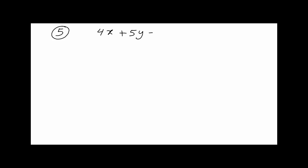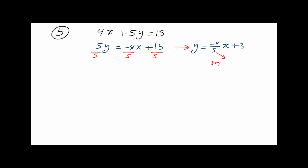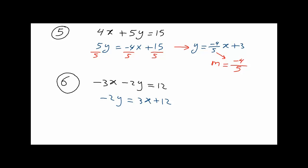Example 5: 4x plus 5y equals 15. Solving for y and dividing by 5 gives y equals -4/5 x plus 3. So the slope is -4/5. Example 6: -3x minus 2y equals 12. Solving for y: -2y equals 3x plus 12, then dividing by -2 gives y equals -3/2 x minus 6. The slope here is -3/2.